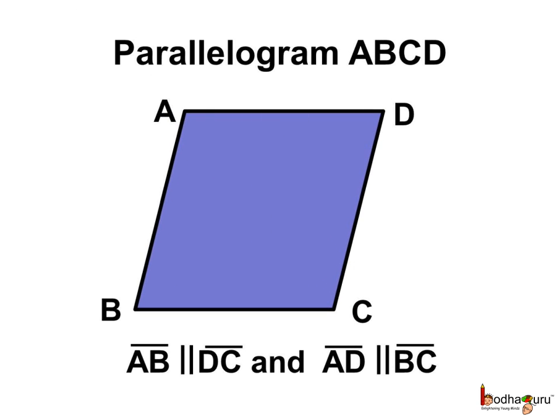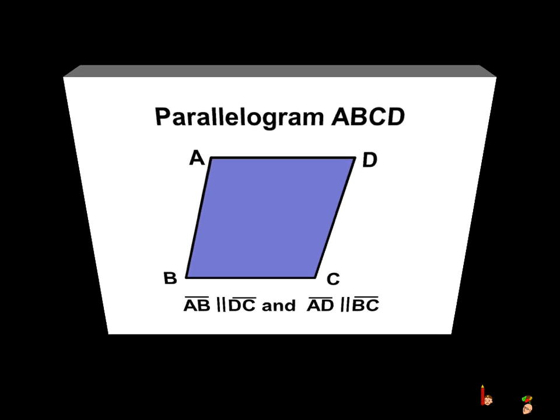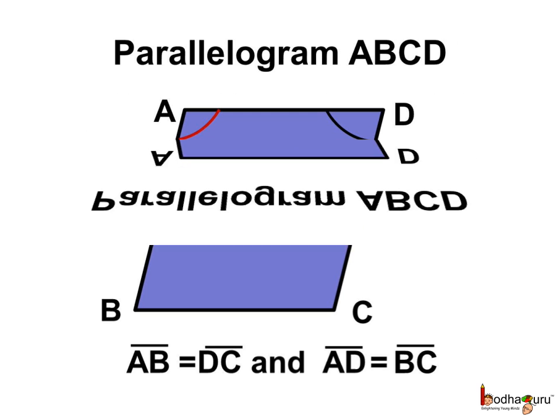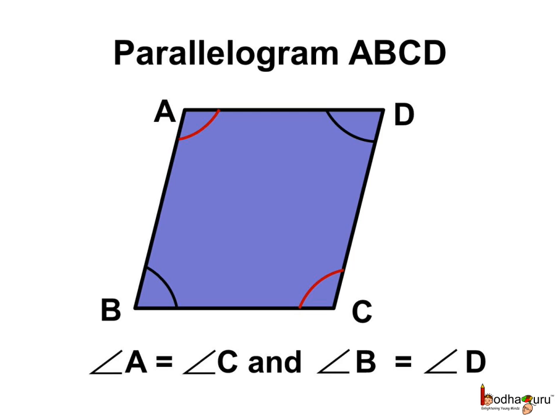So, in this parallelogram ABCD, AB is parallel to DC and AD is parallel to BC. Also, the line segment AB is equal to line segment DC and the line segment AD is equal to the line segment BC, which means the opposite sides are also equal. Not just the opposite sides, even the opposite angles are equal. Hence, angle A is equal to angle C and angle B is equal to angle D in the parallelogram ABCD.